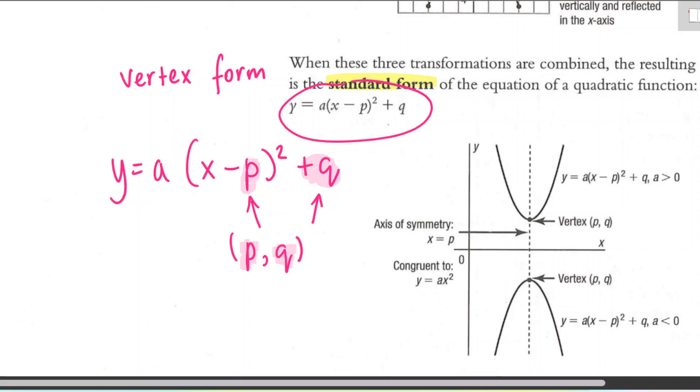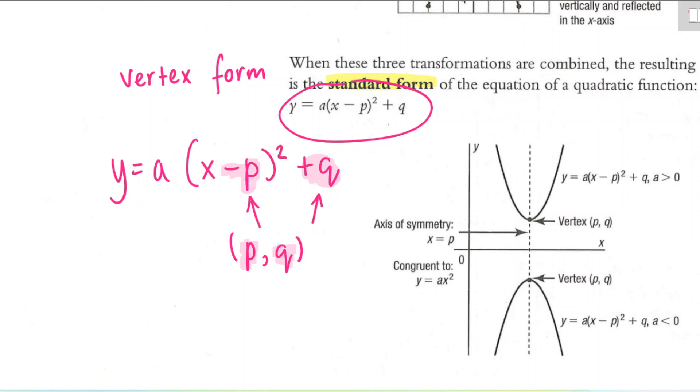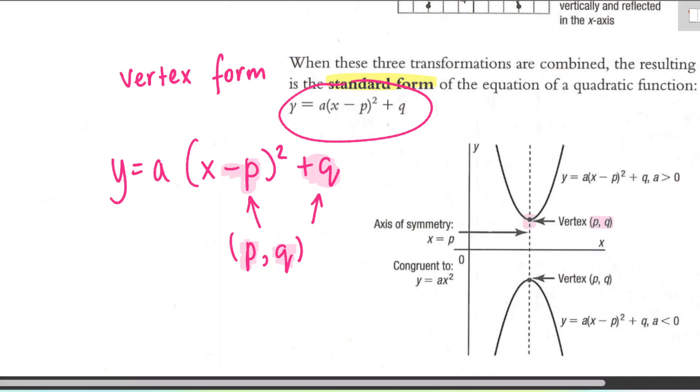One thing to note is we have a negative sign in front of the P. So you do have to flip the sign of that number. I'll show you an example in just a moment. So we do know where the vertex is. So it's here at PQ.